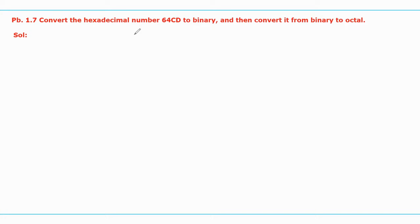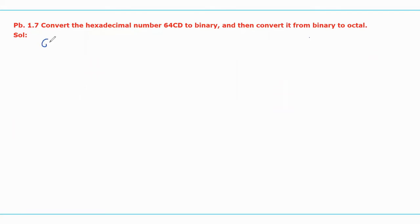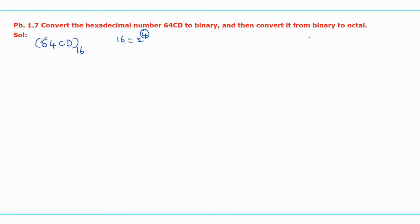To solve this problem, let us take the given hexadecimal number 64CD with base or radix value 16, as it is a hexadecimal number system. We should convert 16 in terms of power of 2, which becomes 2 power 4, where the power value represents the number of bits required to convert the hexadecimal number in terms of binary. To convert hexadecimal into binary, you should take 4 binary weights for each digit — those are 2 power 0, 2 power 1, 2 power 2, and 2 power 3.